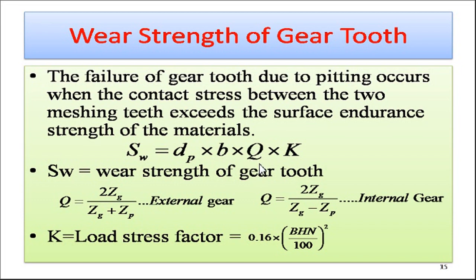The ratio factor is the relationship between the number of teeth on the pinion and gear. This q is defined as 2 times zp divided by zg plus zp if both gears are externally meshing. If the pinion and gear have an internal gear arrangement, then the ratio is 2 times zp divided by zg minus zp. The load stress factor depends on the Brinell hardness number and is given by 0.16 times BHN divided by 100, bracket squared.